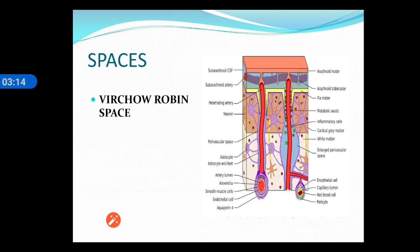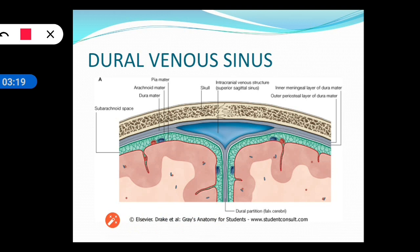The dura mater consists of an outer periosteal layer and an inner meningeal layer. They are closely in approximation except at some places where the endosteal layer of the dura mater is separated from the meningeal layer. At such places of separation there exists the dural venous sinus. A fold of dura mater enters the brain substance and divides the brain into compartments.